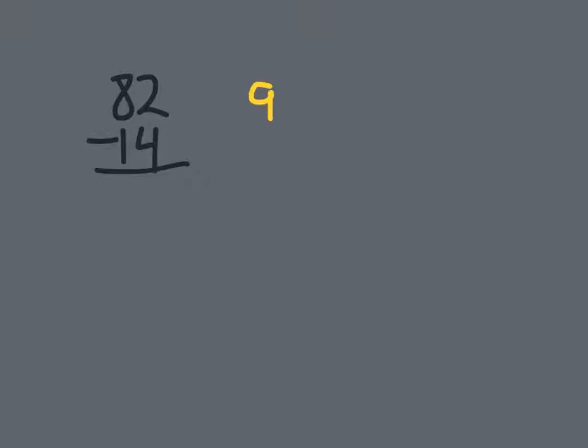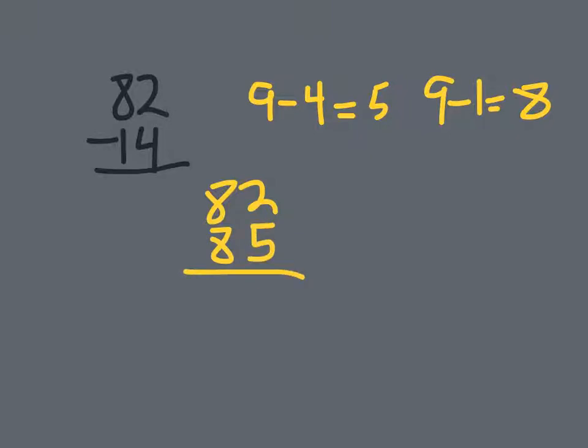So I'm going to give myself two problems here. I got nine minus four which is going to equal five, and then nine minus one which is going to equal eight. And then I'm going to add. I'm going to take 82 which is my original number and I'm going to make a new number from my sums which is going to be 85.